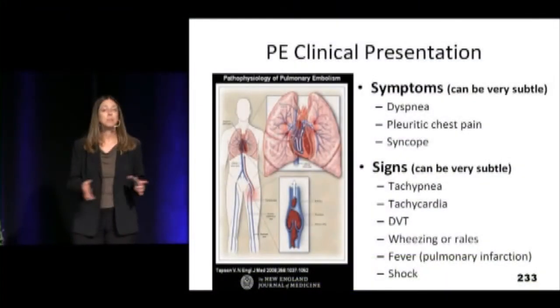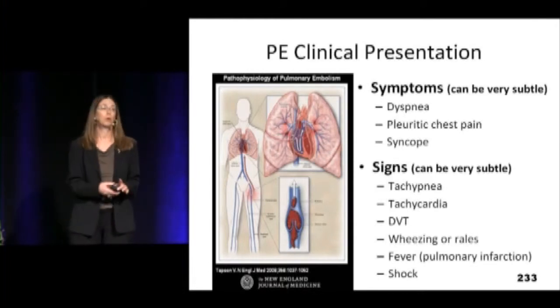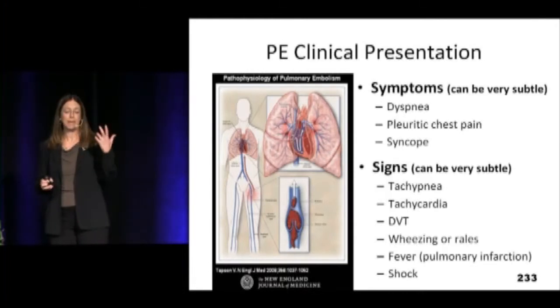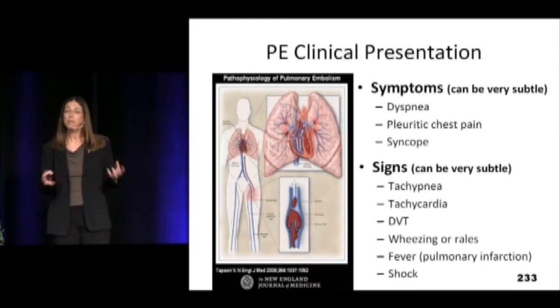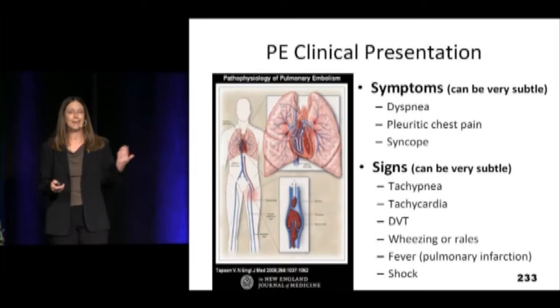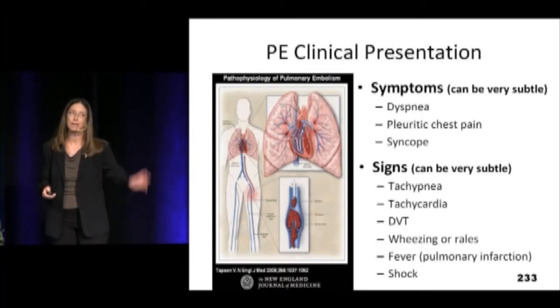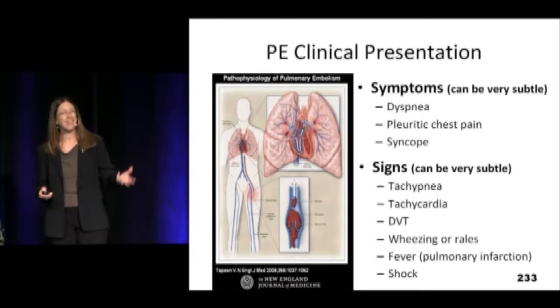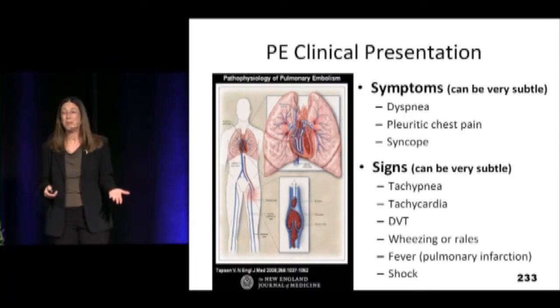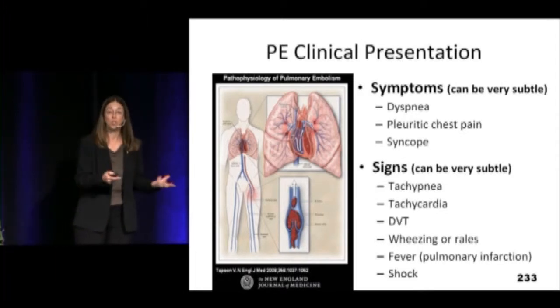The symptoms are what we expect: pleuritic chest pain, shortness of breath, tachycardia, tachypnea, low pulse ox — all things you look for. We know that's how they present. The key is where do we draw the line saying it's definitely pneumonia versus, I'm just not so sure — this may be a PE — and that's when you have to make the decision of which is which and what do you do.